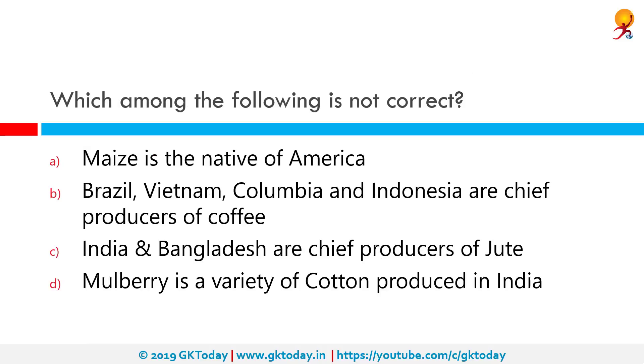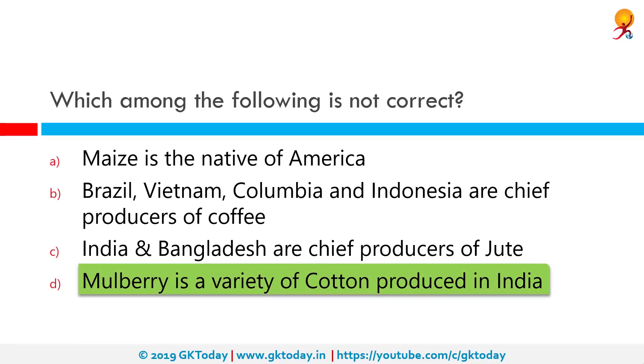Which among the following is not correct? Among the given options, option D is not correct. Mulberry is actually a variety of silk produced in India, and not a type of cotton.